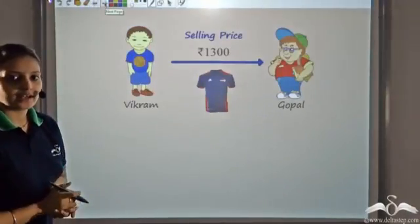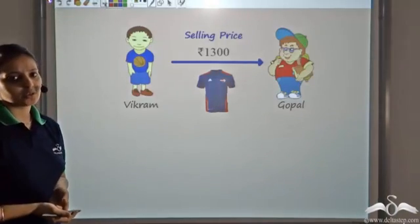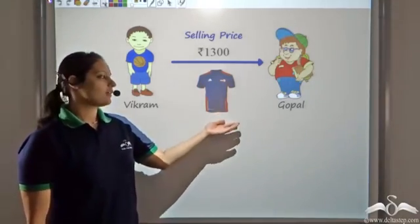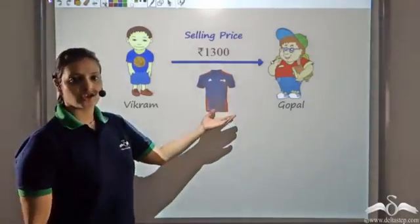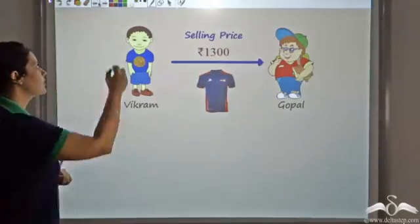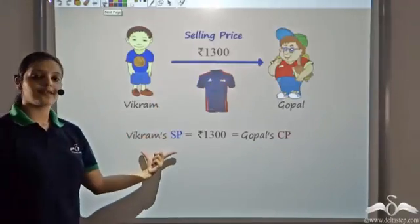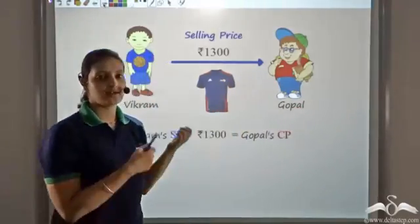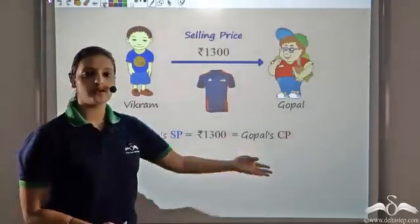Vikram was a big supporter of the Delhi Daredevils, but the team did not perform well in the IPL season and could not make it to the semi-finals, so he no longer needed the t-shirt. Gopal, however, really liked the t-shirt and was ready to buy it for 1300 rupees. So Vikram sells it to Gopal for 1300 rupees, making Vikram's selling price equal to Gopal's cost price.